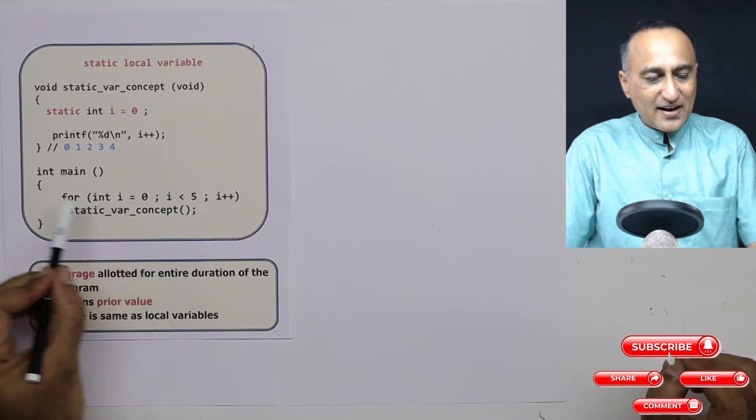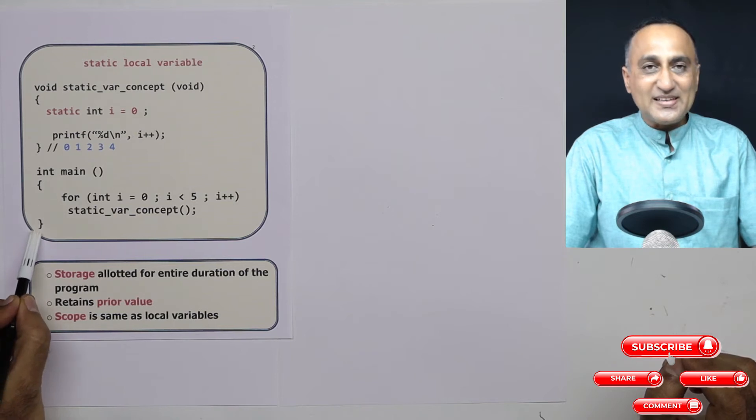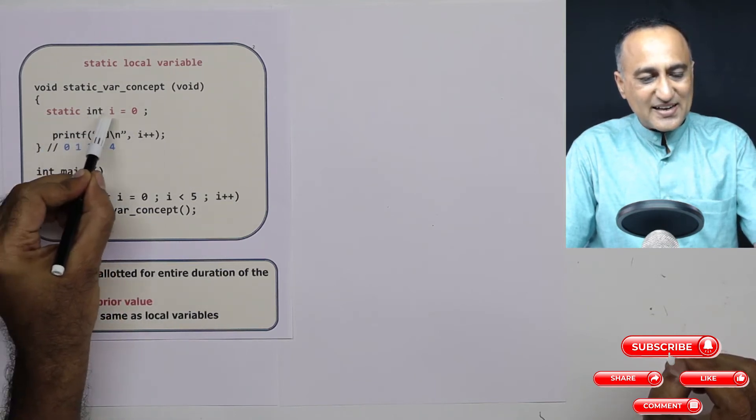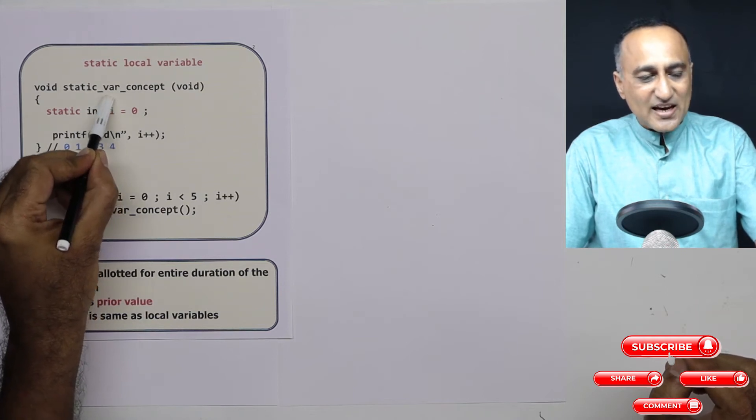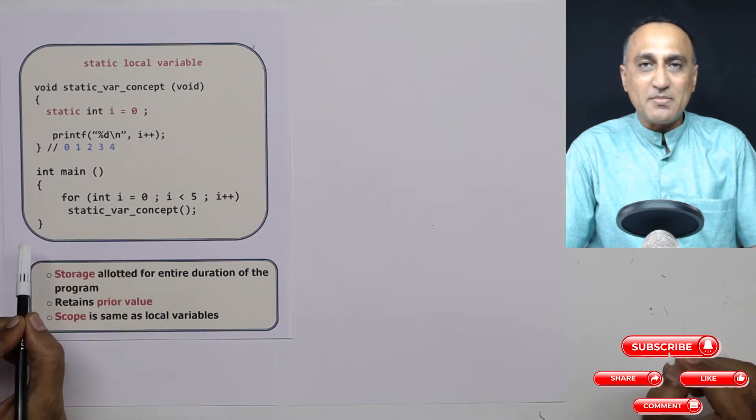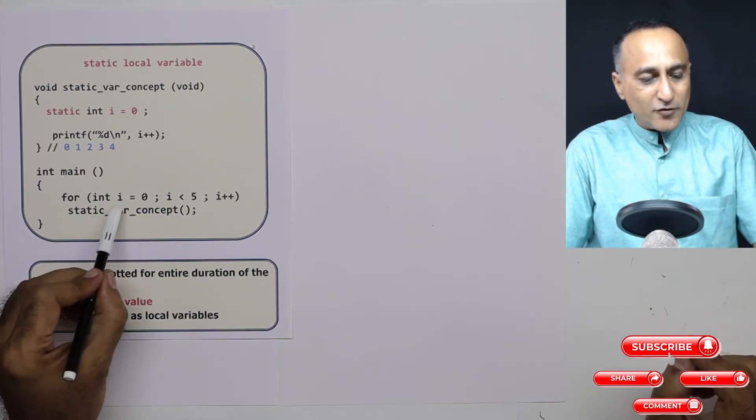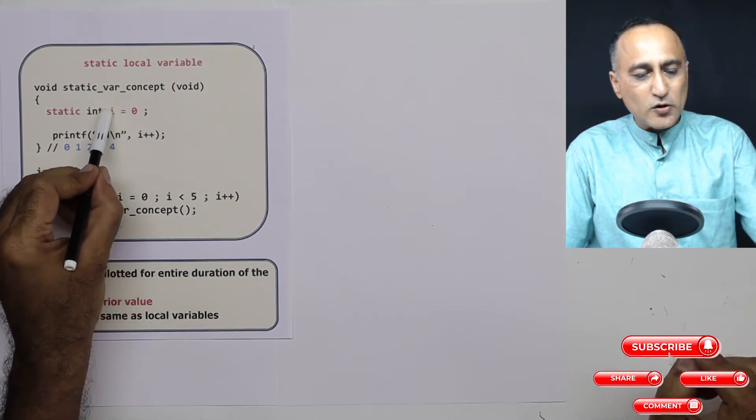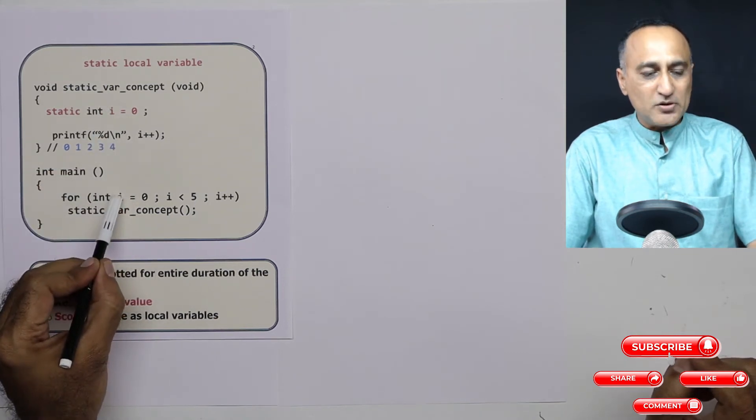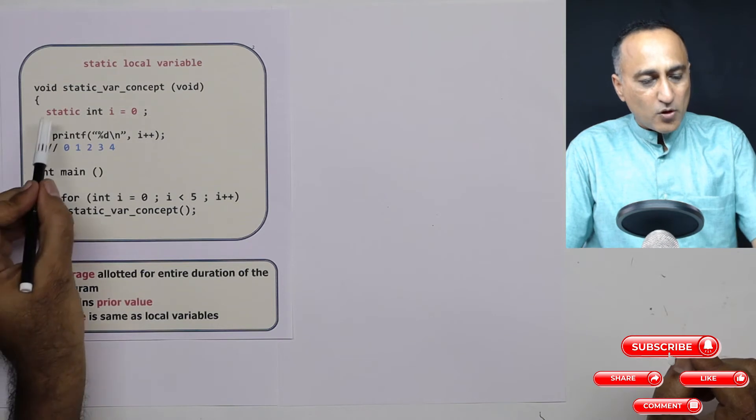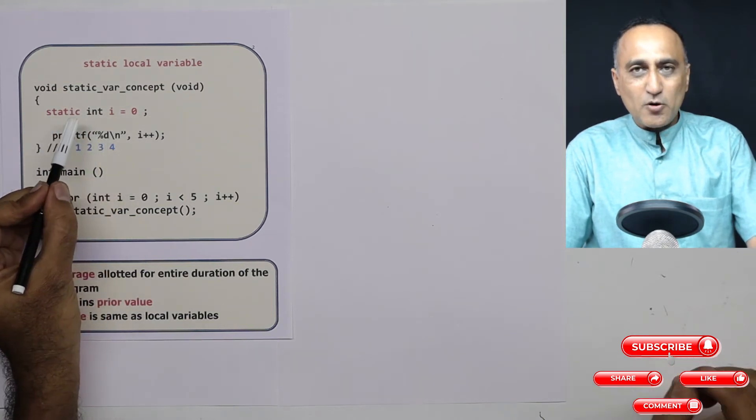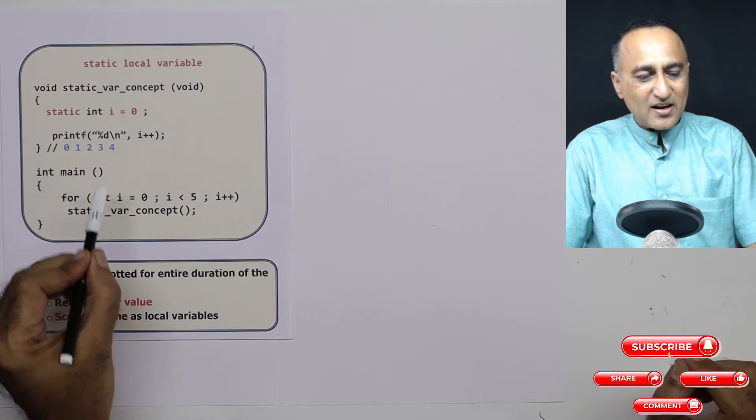You need to understand a few things very clearly here. The i declared here has a life only between this and this. This i is not the same as this static int i. This i will exist in a different memory location. This i will exist in a different memory location. So if you do anything to this, nothing is going to happen to this. Same if you do anything to this, nothing is going to happen to this.